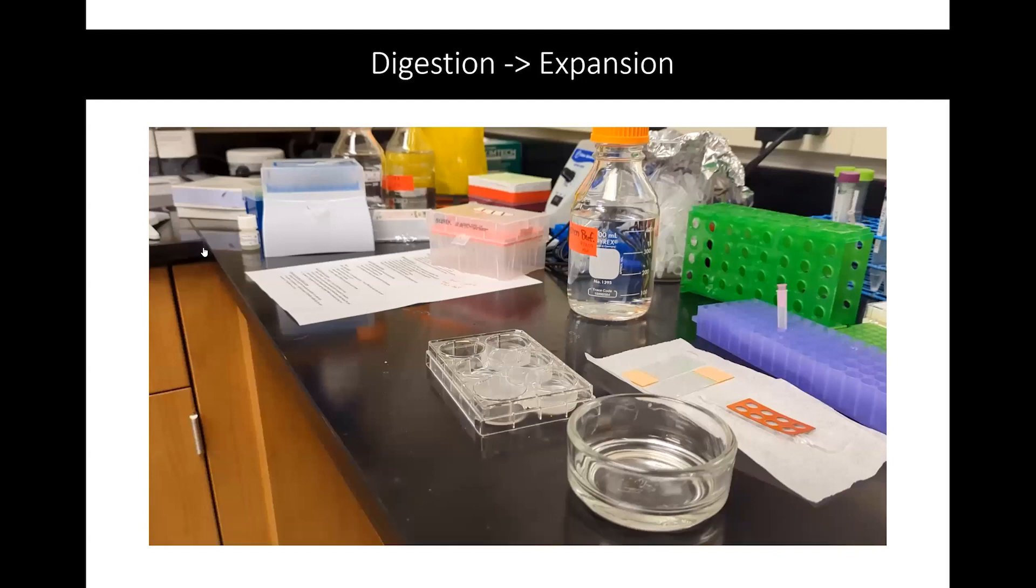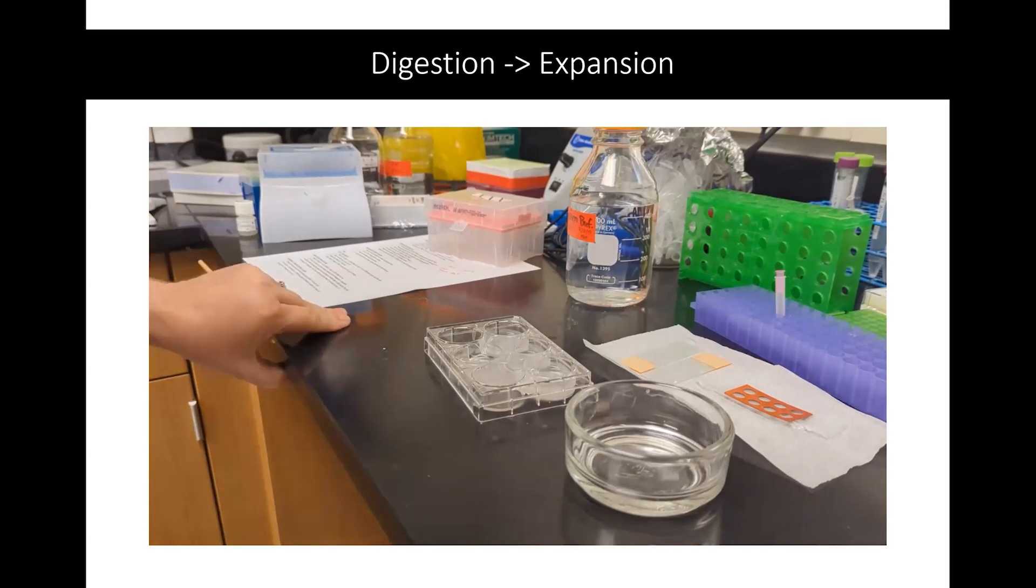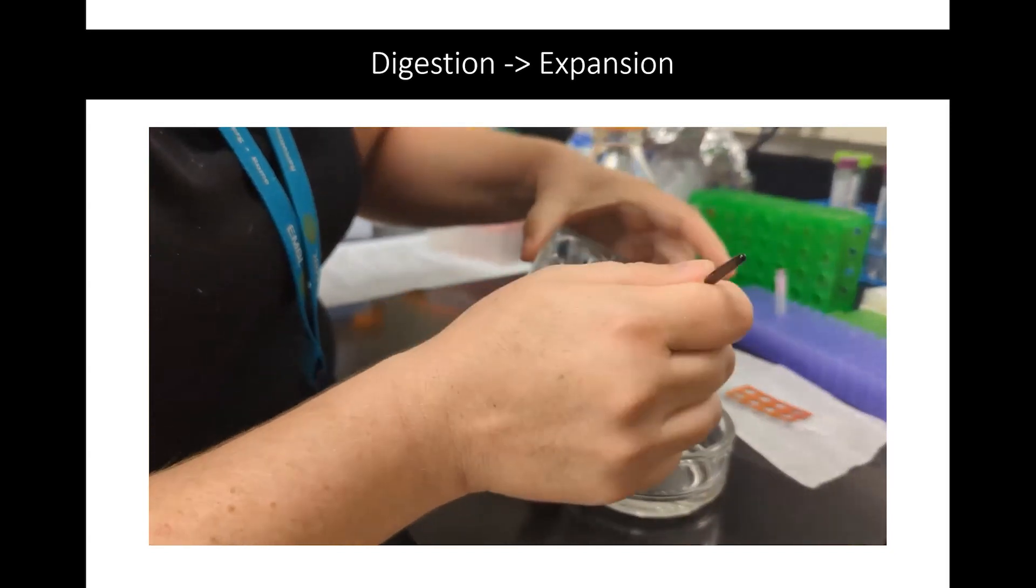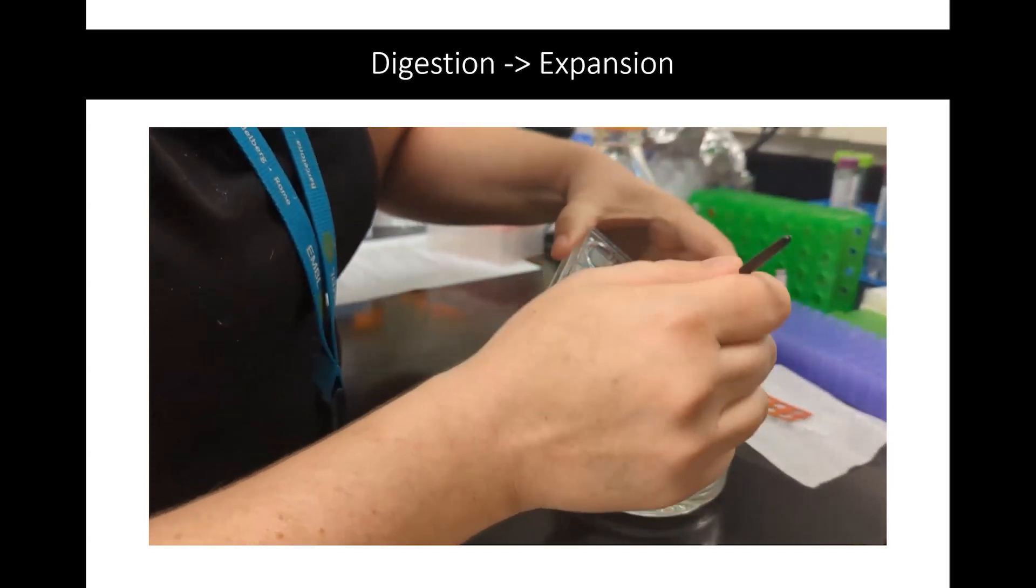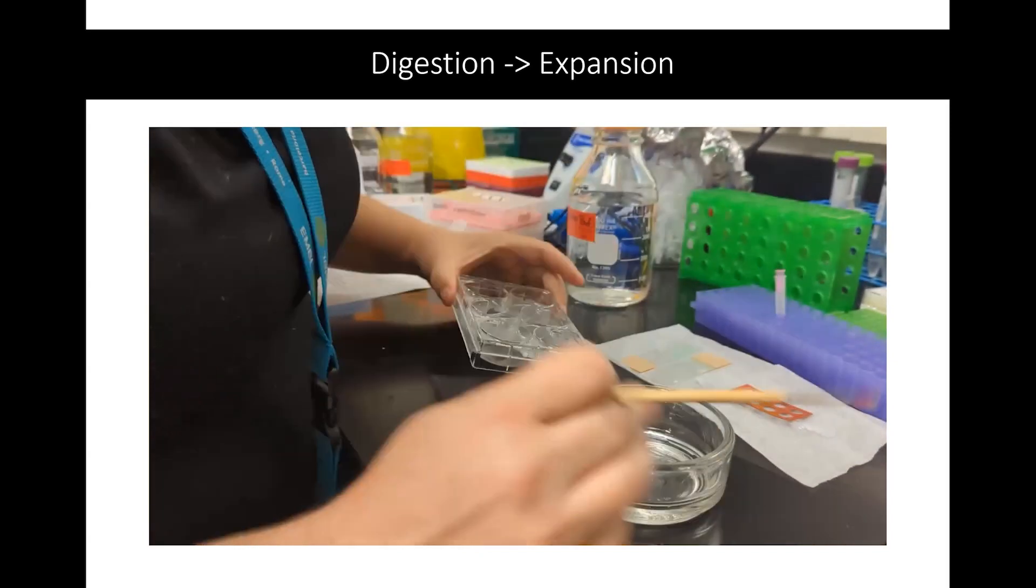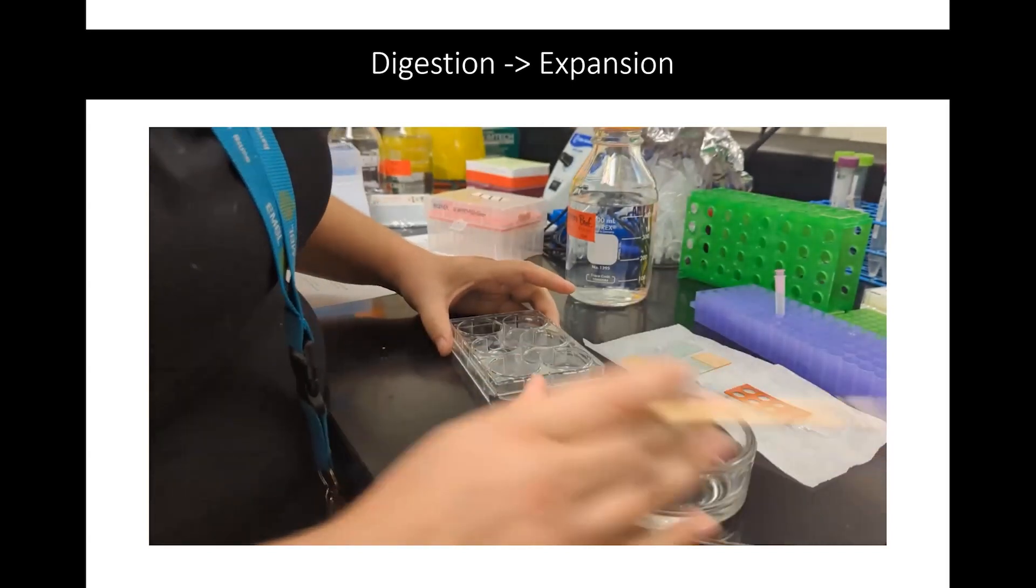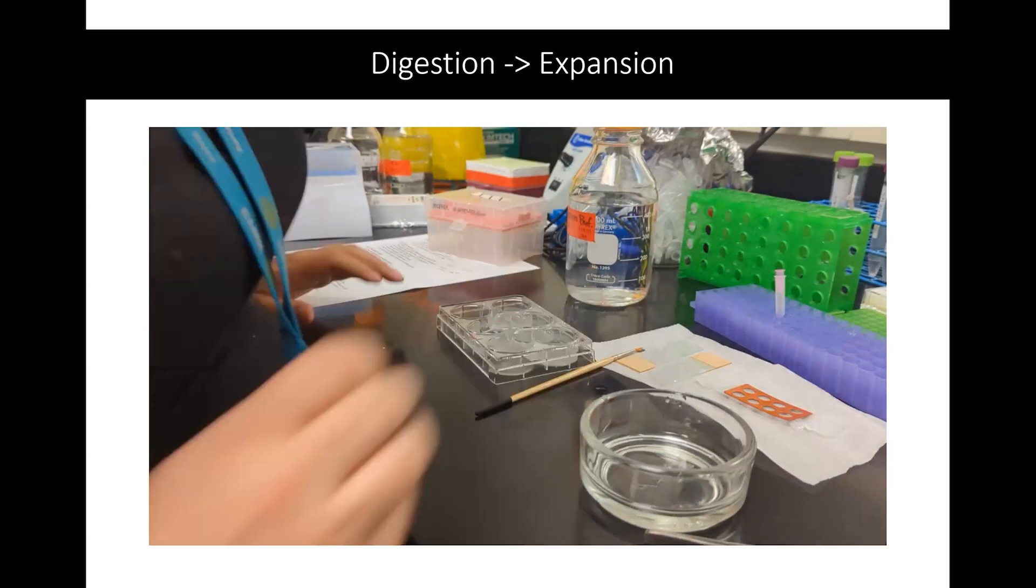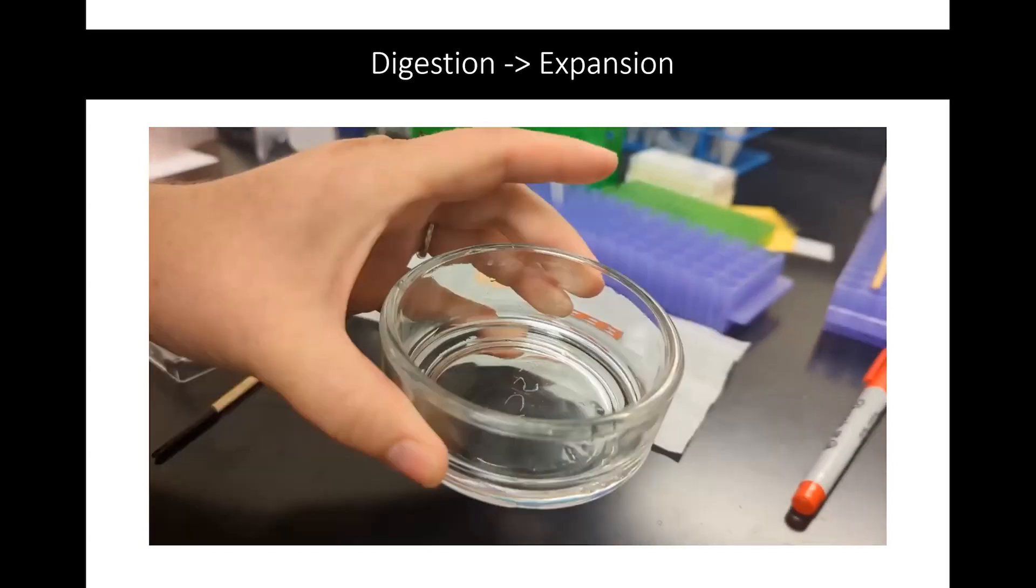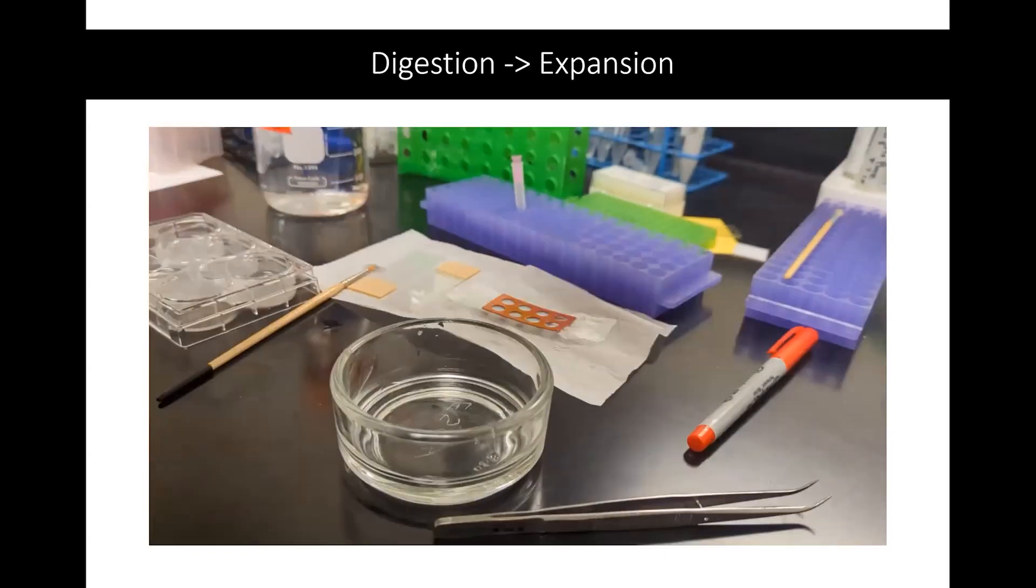And then not shown is adding the fresh proteinase K to do the actual digestion. So then moving from digestion to expansion, this has fully digested the sample. I'm taking a very gentle paintbrush that you would use for sectioning samples, and I'm just pushing it out of the well into a larger dish. And from there, I can now add distilled water to be able to do the expansion. And you can see that the gel has expanded somewhat during the digestion process, and this is entirely normal.